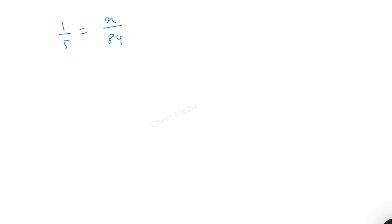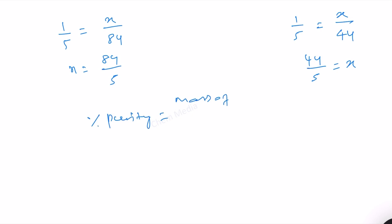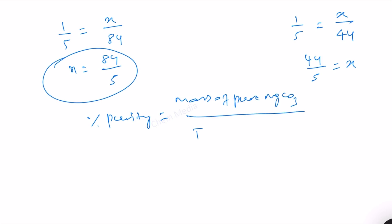Applying the same 1/5 factor to MgCO₃: 1/5 = x/84, so x = 84/5 grams. This is the mass of pure MgCO₃ in the sample. The percentage purity = (mass of pure MgCO₃ / total mass of sample) × 100 = (84/5) / 20 × 100.